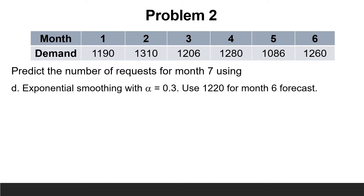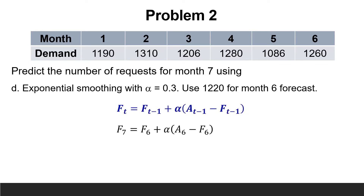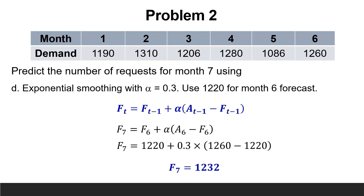The last requirement is to calculate the forecast for month 7 using exponential smoothing with a smoothing constant of 0.3, given that the forecast for month 6 was 1220. Applying the exponential smoothing equation: F7 = F6 + α × (A6 − F6) = 1220 + 0.3 × (1260 − 1220) = 1232.